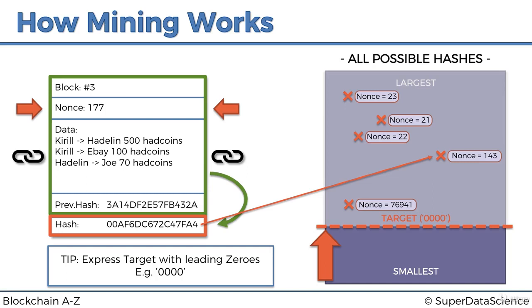The reason we use the hashing algorithm is that you cannot reverse-engineer it — you cannot crack it and predict what hash you'll get based on the nonce you input. As soon as someone is able to do that, the whole concept falls apart, because they'd just predict the nonce, skip all the machine time, and submit a block directly. The SHA-256 promise is that nobody has been able to crack it — there have been many attempts, but people haven't gotten even close.